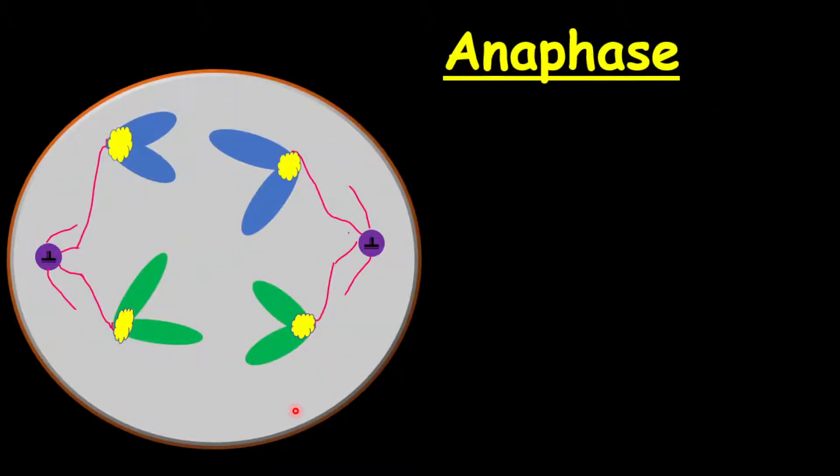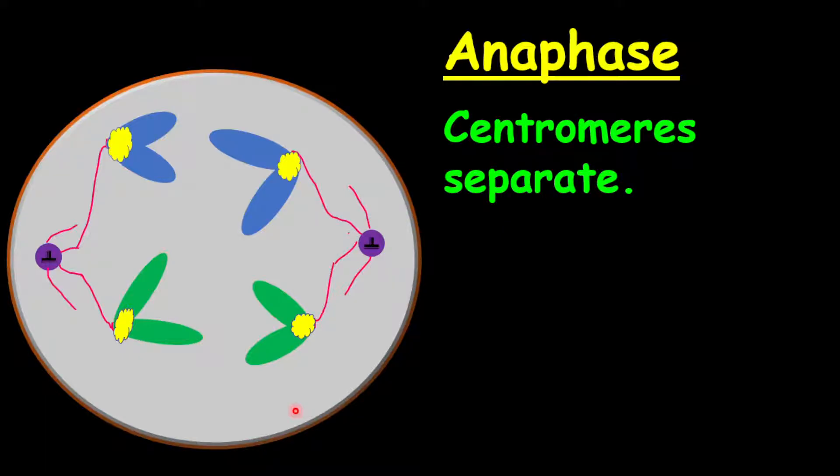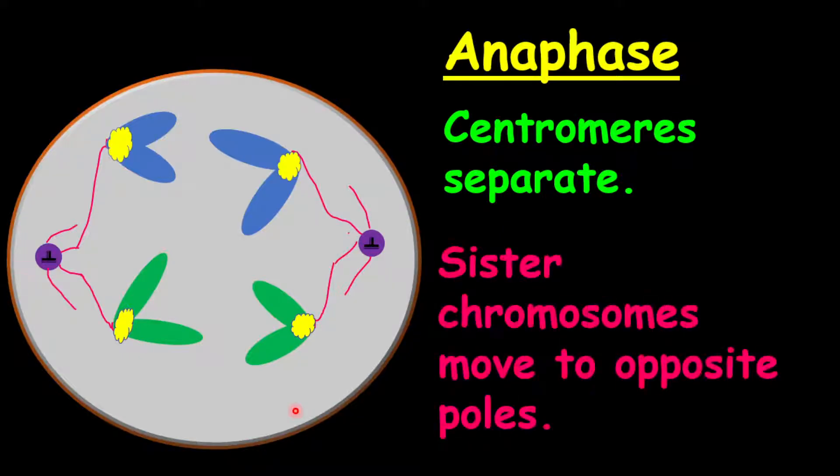The anaphase follows the metaphase. And in the anaphase, the centromeres separate. And this will cause the sister chromosomes to move to opposite poles of the cell or opposite sides of the cell.